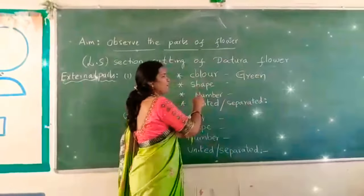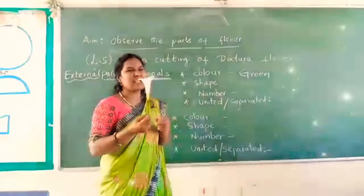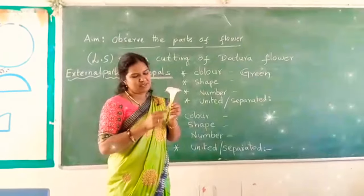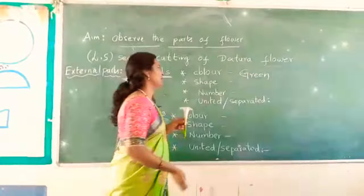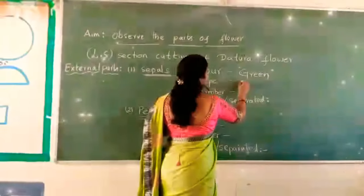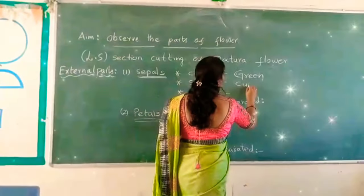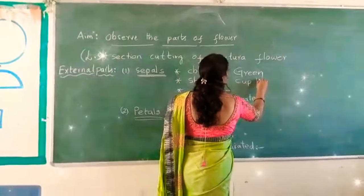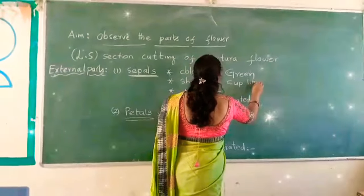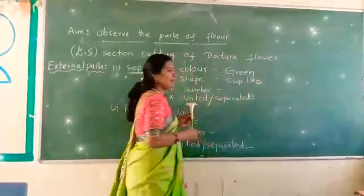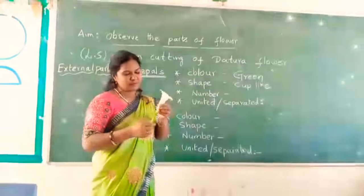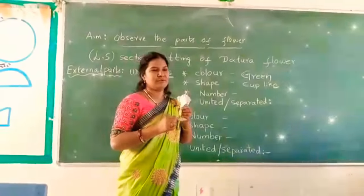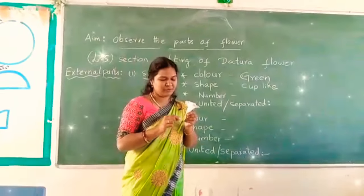Next, shape. What is the shape of the sepals? Cup-like. And then, number — five. Yes, five.